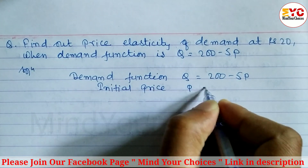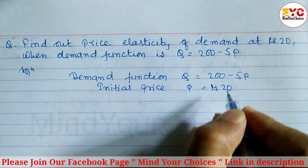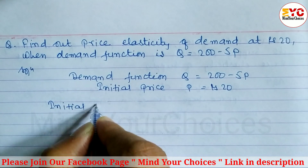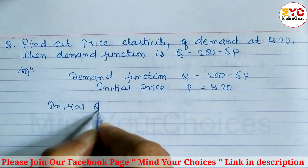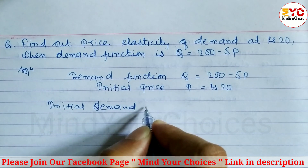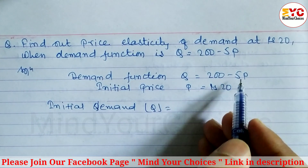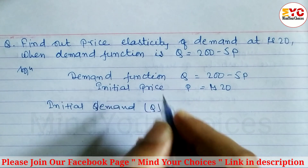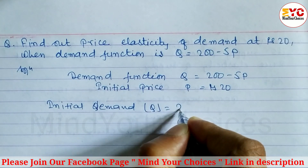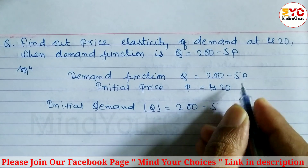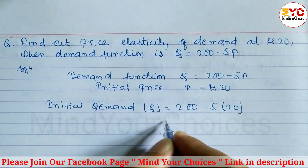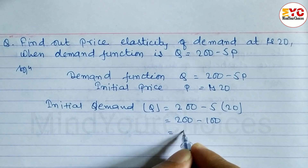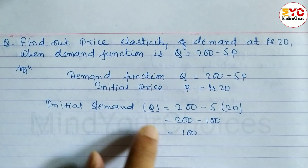After that, we find the initial quantity. To find initial demand, substitute p = 20 into the demand function: q = 200 minus 5 times 20. When you multiply, 5 times 20 gives 100, and 200 minus 100 gives 100. So the initial demand q = 100.